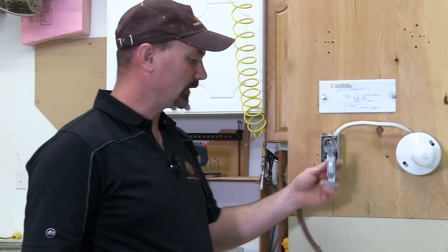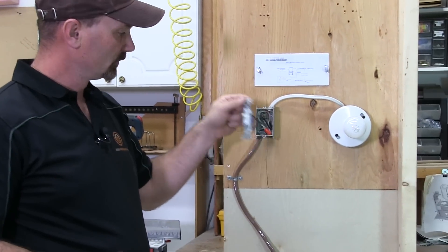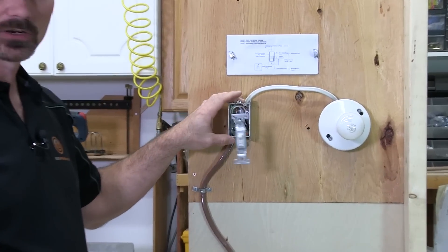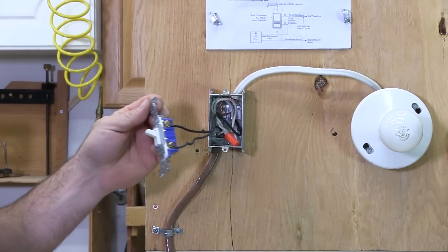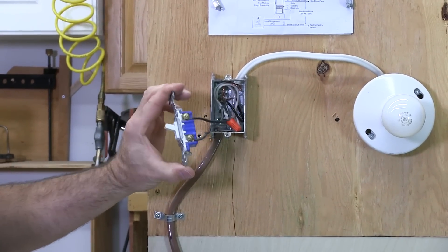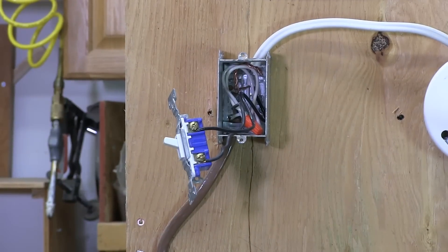So what you would do here, obviously, turn the power off, remove your switch from the electrical box and you're going to find that you're going to have two wires hooked to that switch, two only.